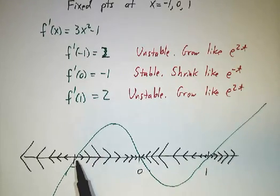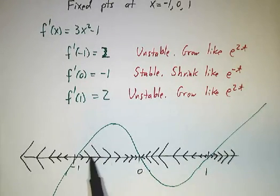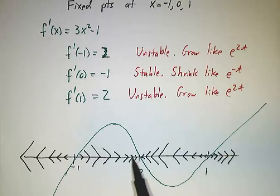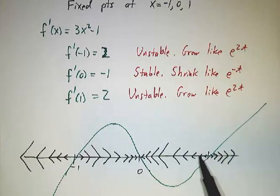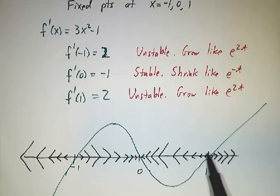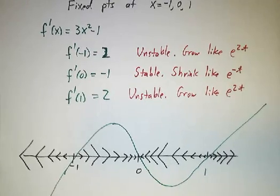So if you start off close to -1, you run away from -1 at a rate that is e^(2t). You start off close to 0, you run towards 0 like e^(-t). And if you start off close to 1, you run away from 1 at a rate that is like e^(2t).